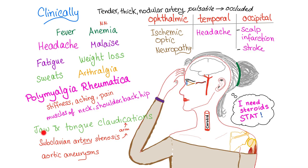There is also jaw and tongue claudication. The condition may also have subclavian artery stenosis, which leads to arm claudication. Severe cases can have aortic aneurysms, which can rupture — this is bad. The arteries involved are the ophthalmic, temporal, and occipital artery.